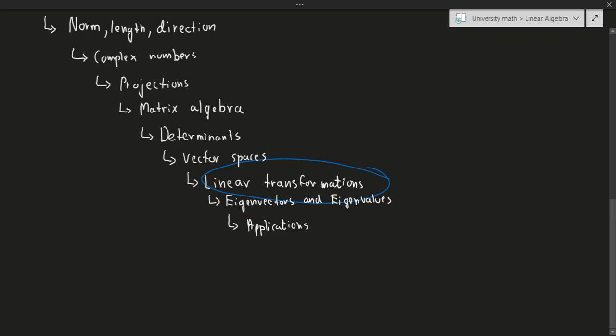Then we talk about the idea of linear transformations, which is essentially the cornerstone of linear algebra and probably one of the most important things about how linear algebra works in general. And finally, we talk about eigenvectors and eigenvalues, which are essentially, I would probably argue, the second most important part of linear algebra, right after linear transformations.